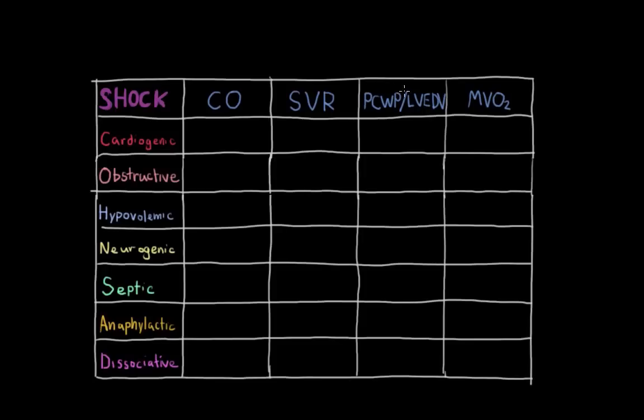PCWP stands for pulmonary capillary wedge pressure. And this is measured with a pulmonary artery catheter. It tells you how well the heart is able to pump fluid forward. If the heart is struggling or if there's some blockage or something preventing blood from being pushed forward by the heart, then PCWP, pulmonary capillary wedge pressure, will be elevated.